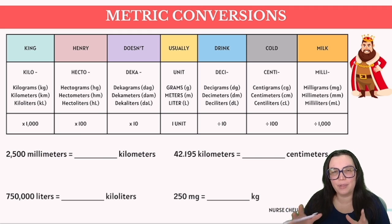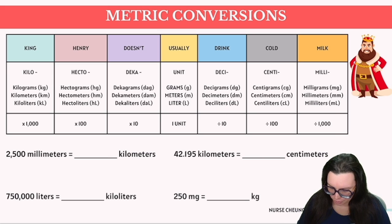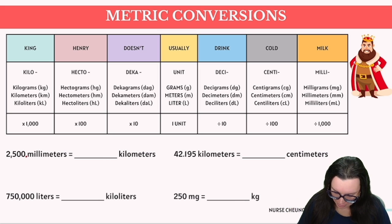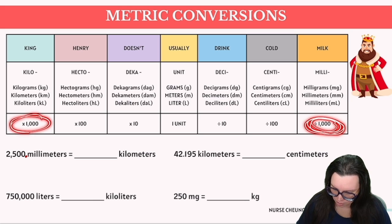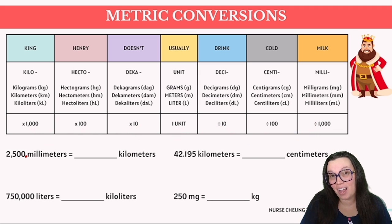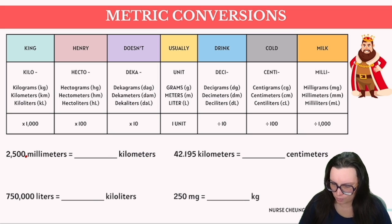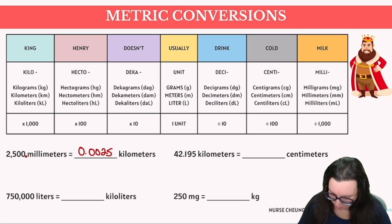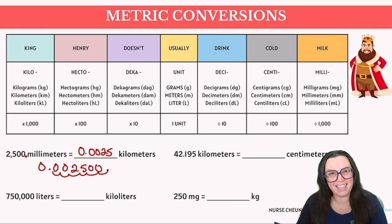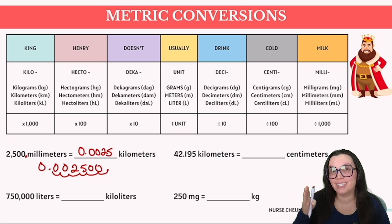We move the decimal left or right depending on the value we're converting. For 2,500 milliliters to kilometers, we move the decimal six places to the left, giving 0.0025. For 750,000 liters to kiloliters, we move three places to the left, giving 750 kiloliters.